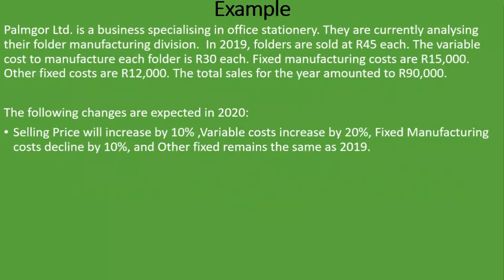We are told that Pumgo Ltd is a business specializing in office stationery; they are currently analyzing their folder manufacturing division. In 2019, folders are sold at R45 each. The variable cost to manufacture each folder is R30 each. Fixed manufacturing costs are R15,000. Other fixed costs are R12,000. The total sales for the year amounted to R90,000.